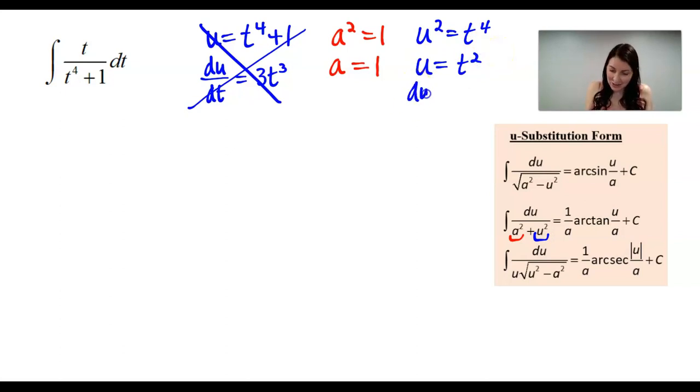When I take the derivative of u with respect to t, I would get 2t. Now you can see if I were to multiply over dt and divide by 2, I get du over 2 equals t dt. And that is what I see right here, that t dt. So that sure looks good.